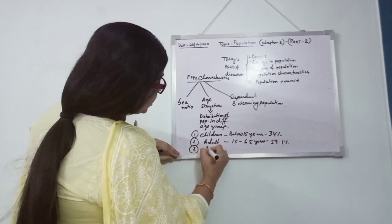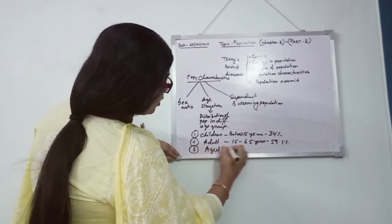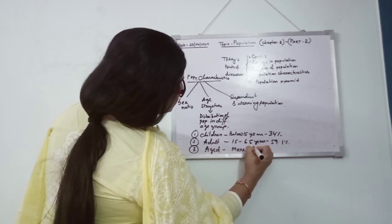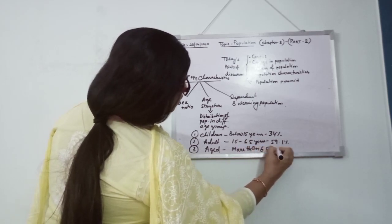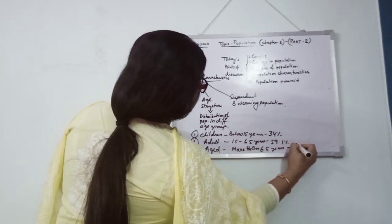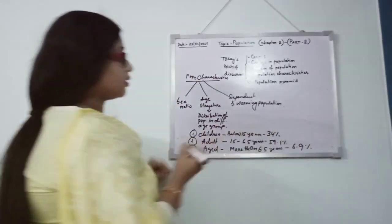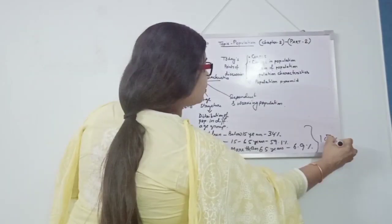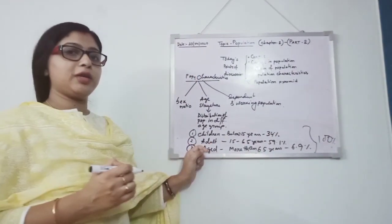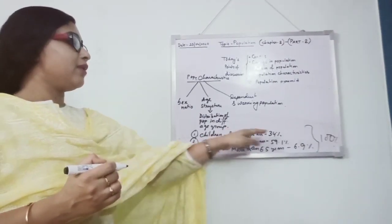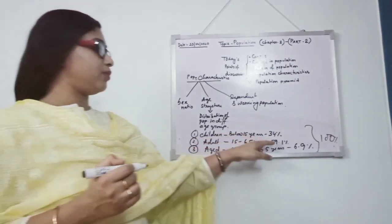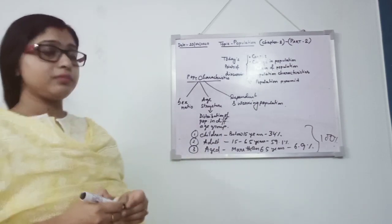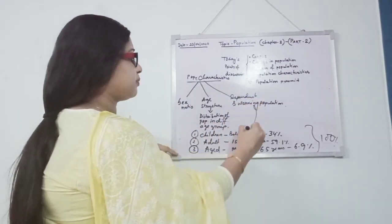Number 3, aged or old, more than 65 years. They are only 6.9% of total population. So total here, we will get to see 100%. This total population, 100% among these: children 34%, adult 59.1%, aged 6.9%. Here I will also explain the dependent and working population.